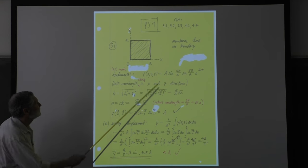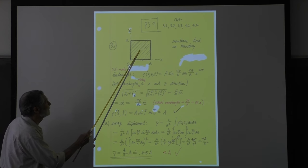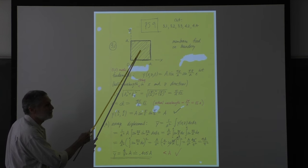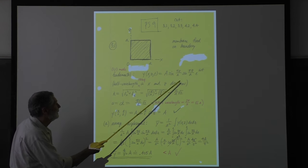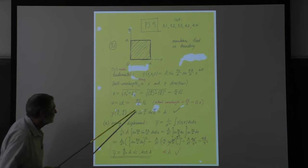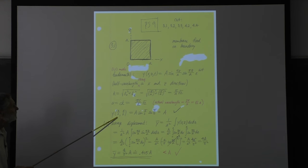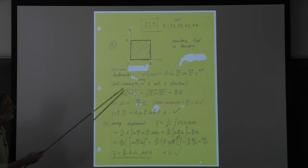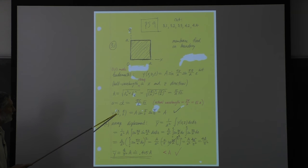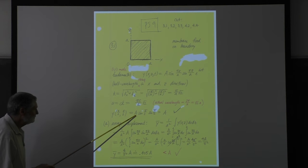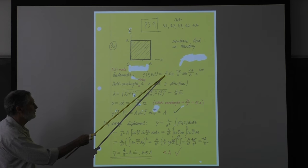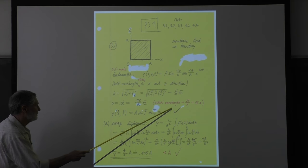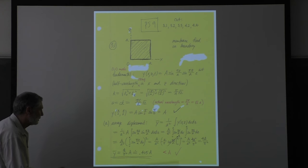To check our solutions, we know the maximum amplitude has to be right in the center. If you go to the center coordinates, a/2 and a/2, then we get maximum amplitude - that's why I put a check mark there.